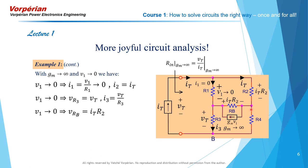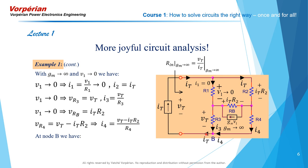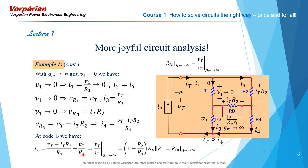That means the voltage across R4 is the sum of this voltage and that voltage, which gives me the current through R4: VT minus IT·R2 divided by R4. These two currents I3 and I4 will add at node B to give me the test current IT. When I substitute for the test current IT as VT minus IT·R2 divided by R4, and for I3 VT over R3, I can divide VT by IT and obtain my input resistance with GM equal to infinity. And this part of the analysis is done.